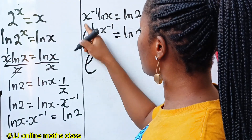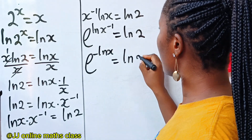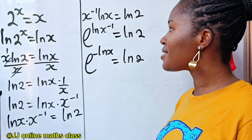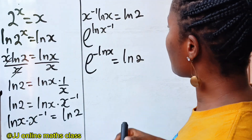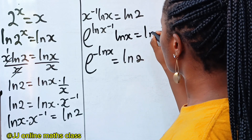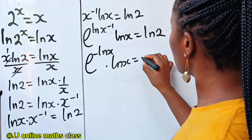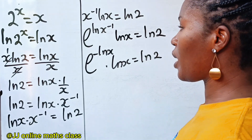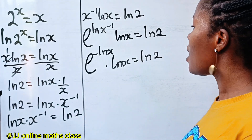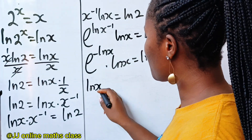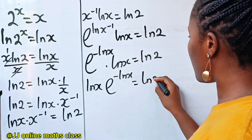This can be written as e to the power of minus ln(x), multiplied by ln(x), is equal to ln2. Now let's bring this to the other side to make it look better. So we have ln(x)·e to the power of minus ln(x) is equal to ln2.